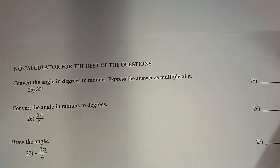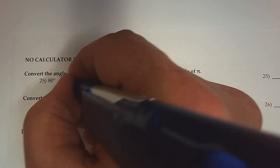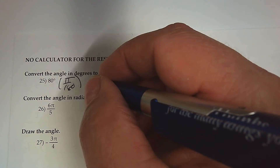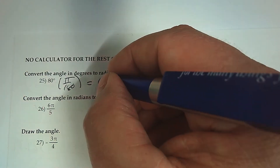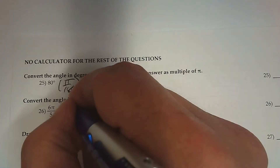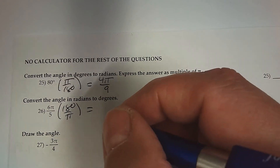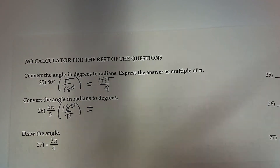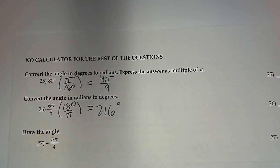Number 25. Convert to radians by multiplying by pi over 180. You can use your calculator or reduce it. So that's 8π over 18, which reduces to 4π over 9. To convert the other way, multiply by 180 over pi. The pi's divide out, and 6 times 180 divided by 5 gives 216 degrees.